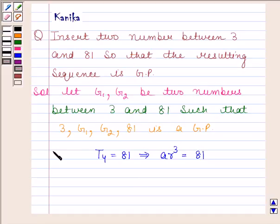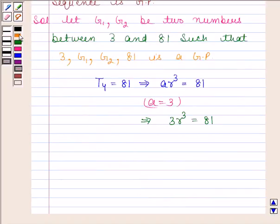The first term, that is A, is equal to 3. So this implies 3 times R to the power 3 equals 81, and this implies R cubed equals 27, and this implies R equals 3.